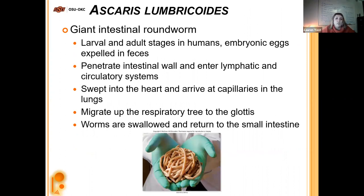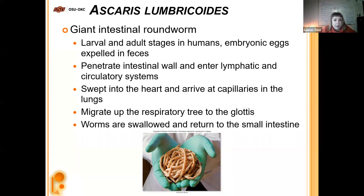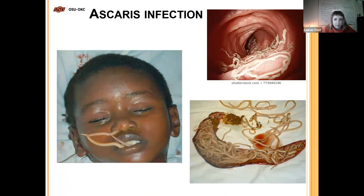Ascaris lumbricoides are giant intestinal roundworms — and they really are giant. Larval and adult stages exist in humans. The embryonic eggs are expelled in feces; the larvae penetrate the intestinal wall and enter the lymphatic and circulatory systems. After going through the intestinal wall, they're swept into the heart, eventually get into the capillaries and migrate into the lungs. Then they migrate up the respiratory tree to the glottis, and you swallow them. Here are pictures of quite a lot of them built up in the gut and, unfortunately, a child horribly infected with worms coming out of his mouth.